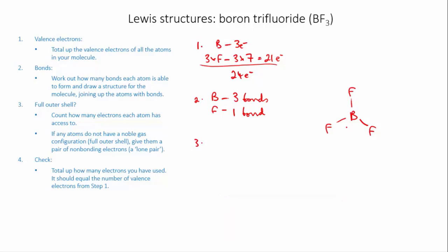The fluorine however, it's one of the ones that really needs a full outer shell and at the moment each fluorine only has access to two bonding electrons. So I'm going to need to give each fluorine three lone pairs so that it now has six non-bonding electrons and two bonding electrons, giving it a full outer shell of eight.